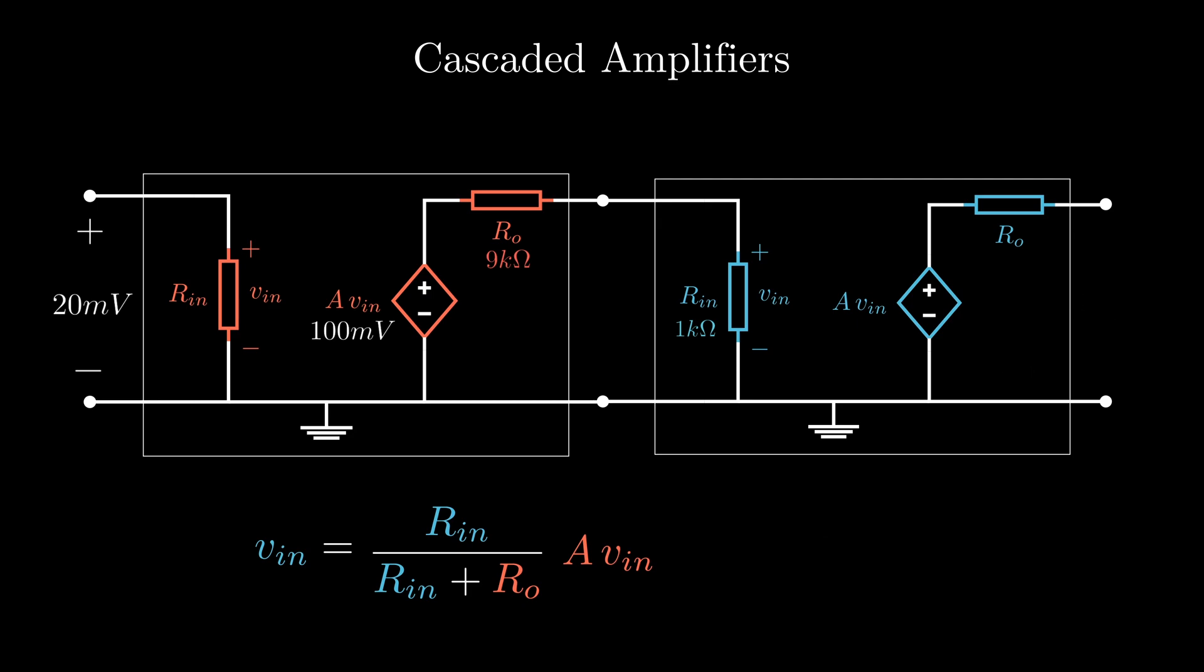But if the output impedance of the first stage was small, something like 10 ohms, and the input impedance of the second stage was huge, something like 100 kilo ohms, then almost the entire 100 millivolts would be transferred to the next stage, and then it becomes 500 millivolts.